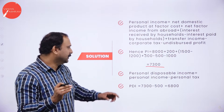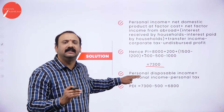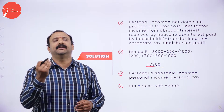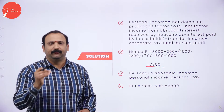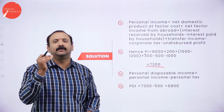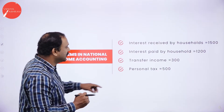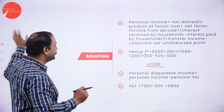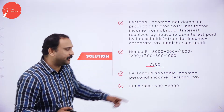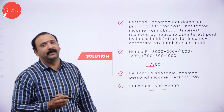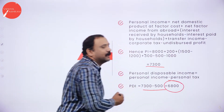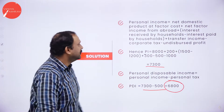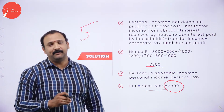From the personal income, we have to calculate the personal disposable income. Personal disposable income is nothing but personal income minus personal tax. In the problem, the personal tax is given at 500. So after calculating your personal income of 7,300, subtract the tax factor from it and you will get your personal disposable income. If you are able to do this, guaranteed 5 marks comes to you automatically.